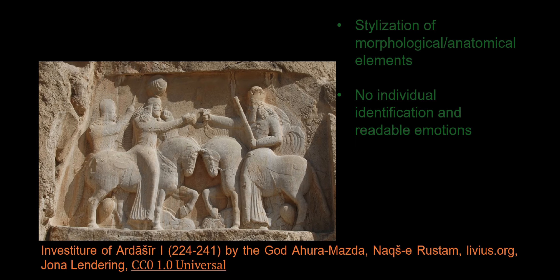I count two main formal features: stylization of morphological and anatomical elements such as hair and beard, but also eyes, ears and lips; and the fact that human portraits do not present individual identification or readable emotions. That is why I would like to think about the notion of mimesis of late antique Iranian art, and not simply in late antique Iranian art. The idea here is to contextualize an aesthetic notion to define an articulate aesthetic context with its own rules.